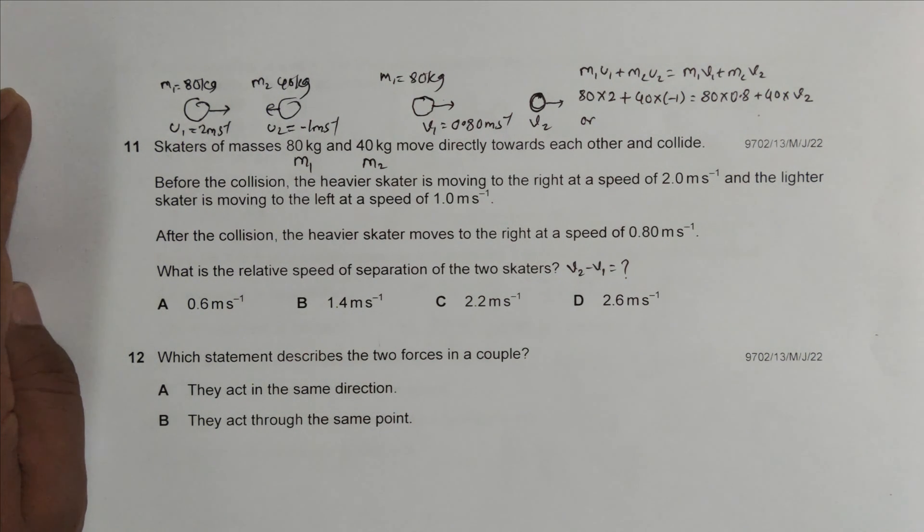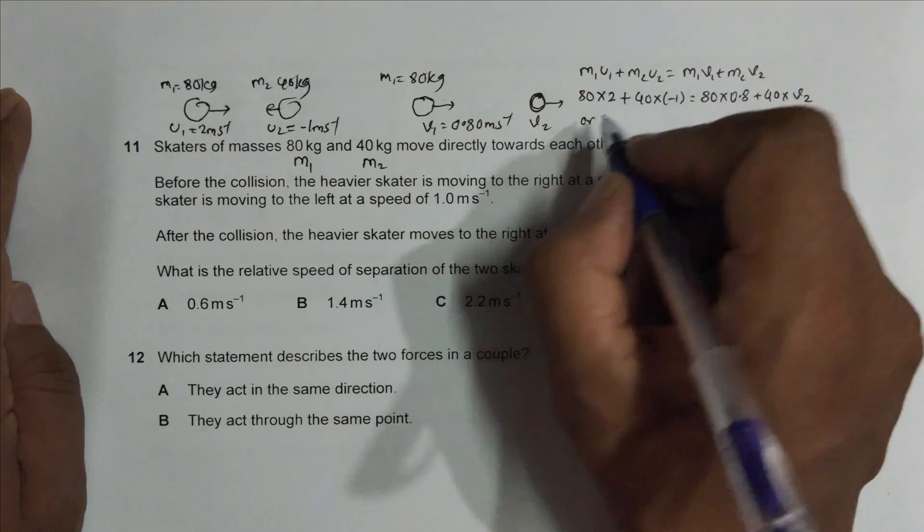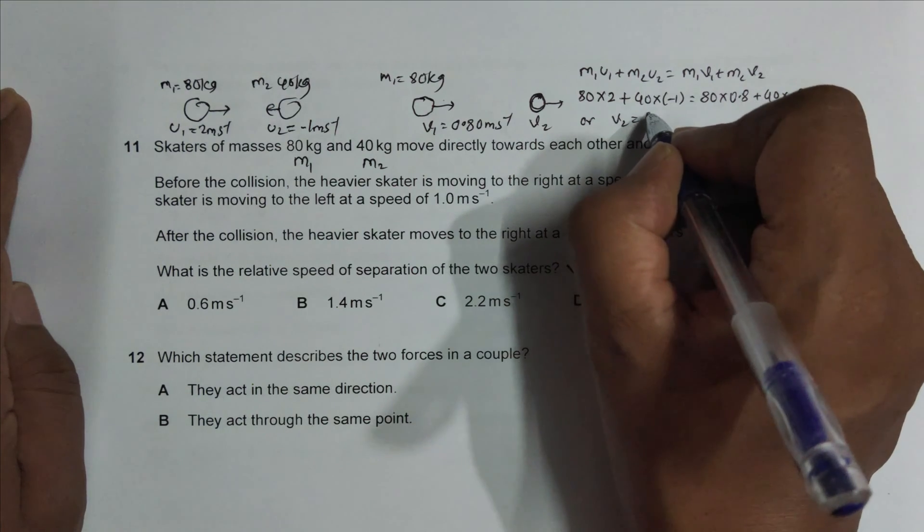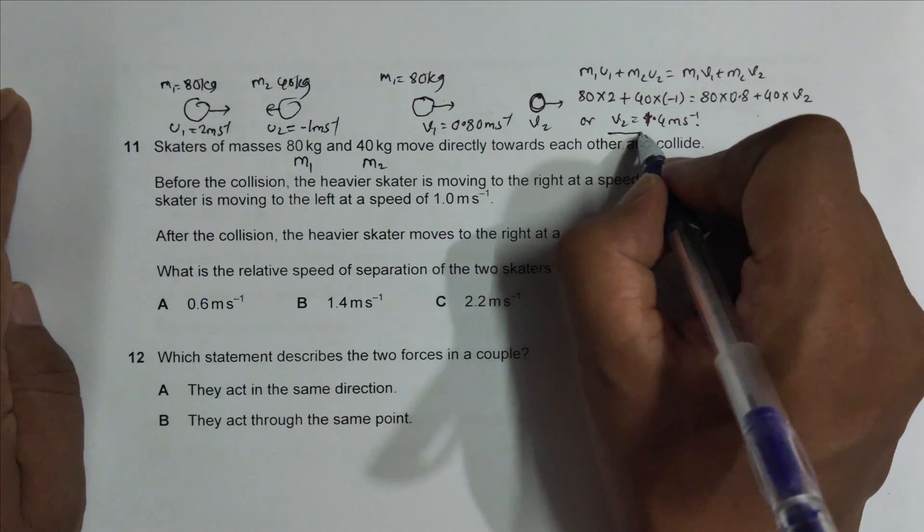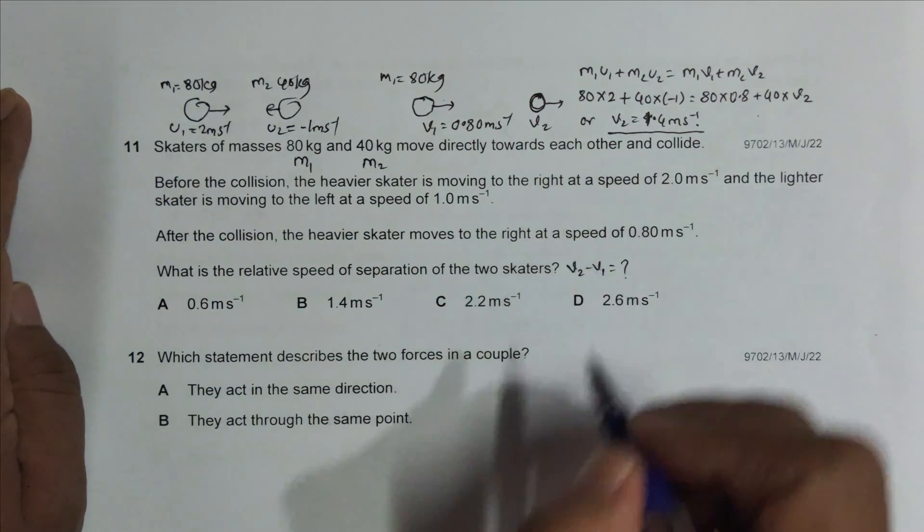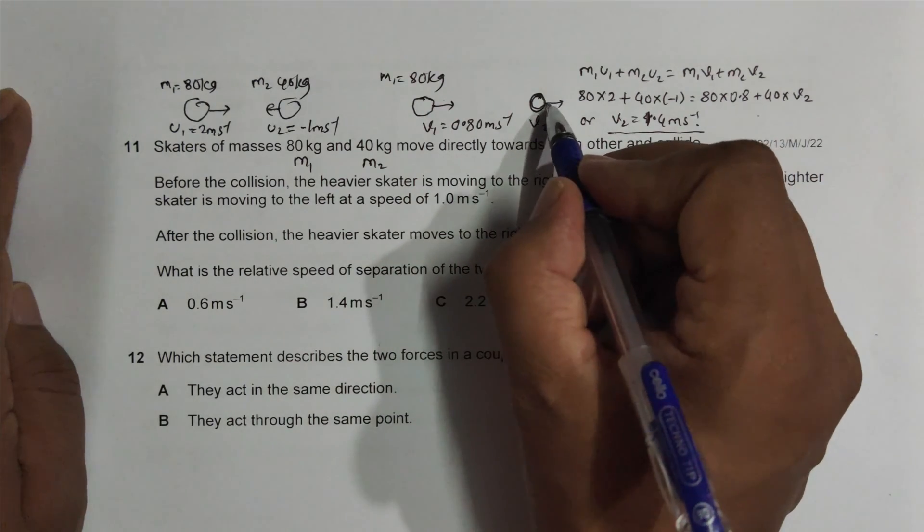So it's equal to, or this v2 is equal to 1.4 meter per second. So v2 is equal to 1.4 meter per second. So this thing will be moving at 1.4 meter per second.